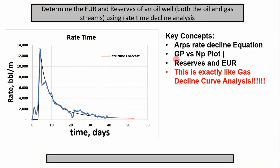Today we're going to look at oil decline curve data. We're going to determine the EUR and reserves of the gas and oil streams using rate-time decline analysis. This is a plot of our data on a rate-time curve. Essentially we're doing the same thing we did in the natural gas engineering series — we're fitting ARPS equations to our data, and then forecasting beyond our last point to get reserves and EUR. If you need a refresher, go look at my rate-time natural gas decline curve video.